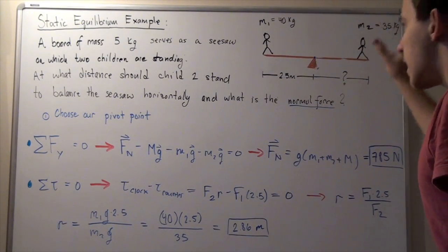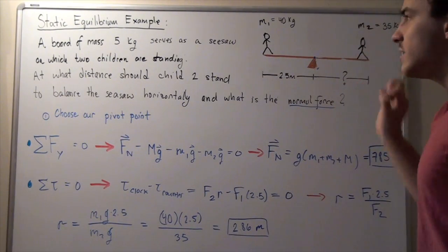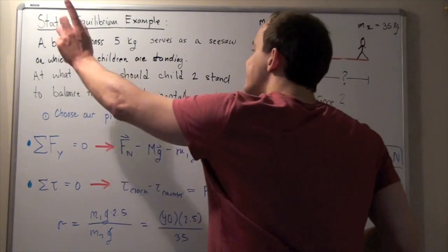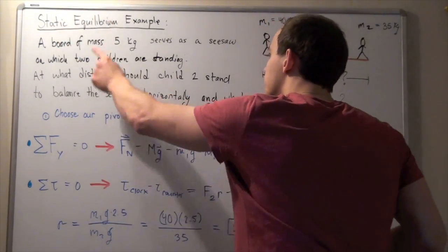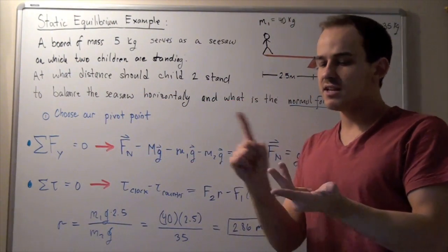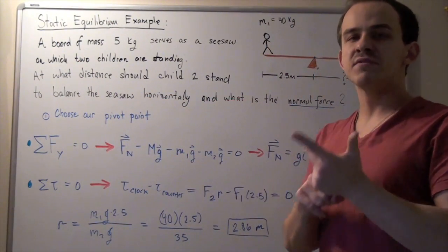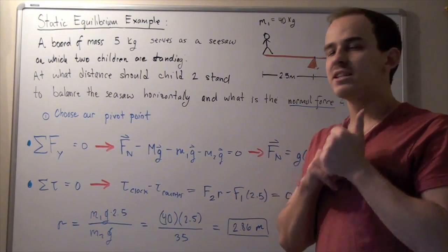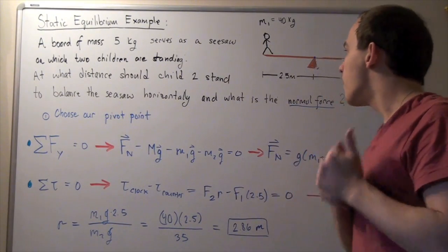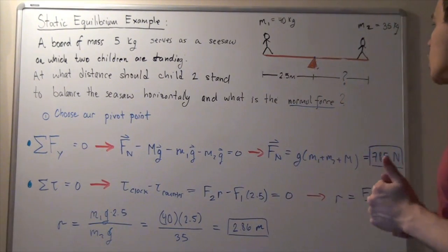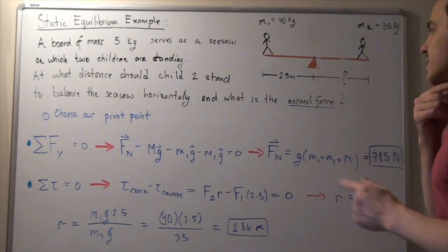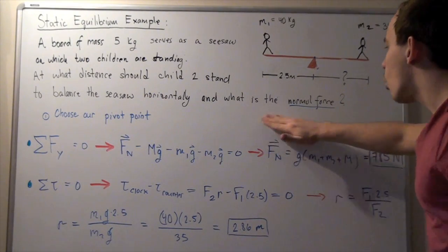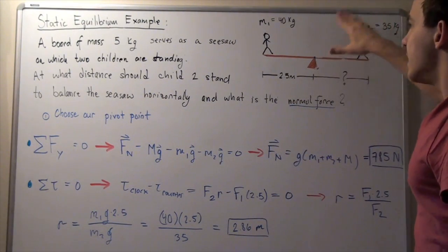We're going to make the initial assumption that our board is under static equilibrium. That means no velocity, no acceleration, no rotation, no translational motion. We want to find what this distance is as well as the normal force acting on our object.